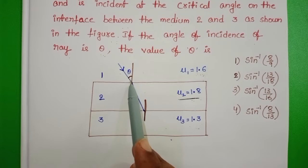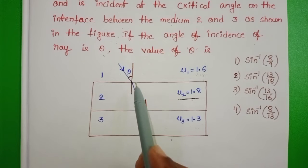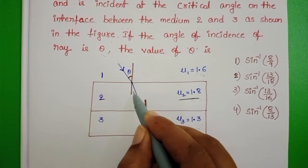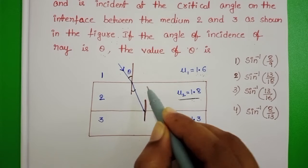A light ray enters from rarer medium to denser medium. It takes the phenomena of refraction. Here angle of incidence is theta. We don't know the angle of refraction. Let it be r.